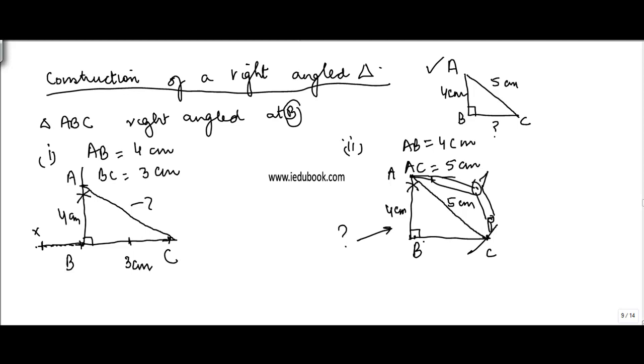If you measure BC it will be equal to three centimeter. Now you must be wondering how it is three centimeter. Remember the formula? H square is equal to BC square plus this side square. So five square is equal to BC square plus four square, which implies that BC square is equal to 25 minus 16 is equal to nine, and therefore BC is equal to square root nine, three.